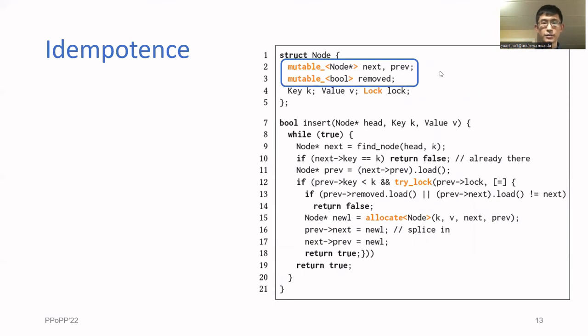Going back to the doubly linked list example, inserting idempotence is done by wrapping the shared variables in the mutable type. Whenever you do a load and store, it automatically determines if you are in a critical section. If so, it writes to the log as described previously.